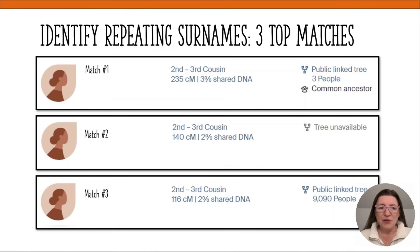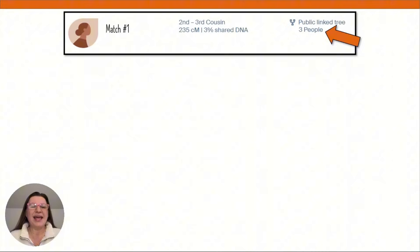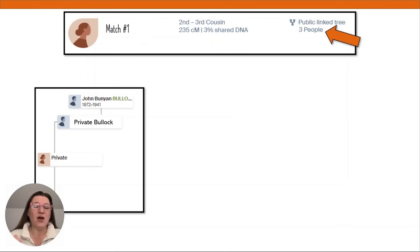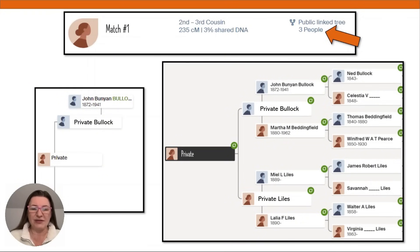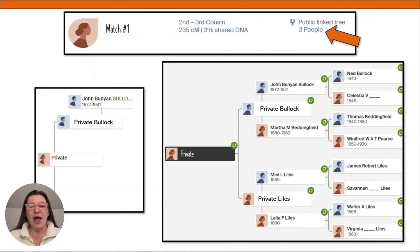Let's start with number one — identifying repeating surnames. I'm going to look at the top three green matches. Match number one has a very small public linked tree with only three people: a private person, her father Bullock, and their grandfather John Bunyan Bullock. Using that grandfather's information, I was able to find another tree and build it out. When I saw this tree, I started writing down the names of the eight great-grandparents: Bullock, Beddingfield, Pierce — ah, there's a Pierce — and Lyle's.